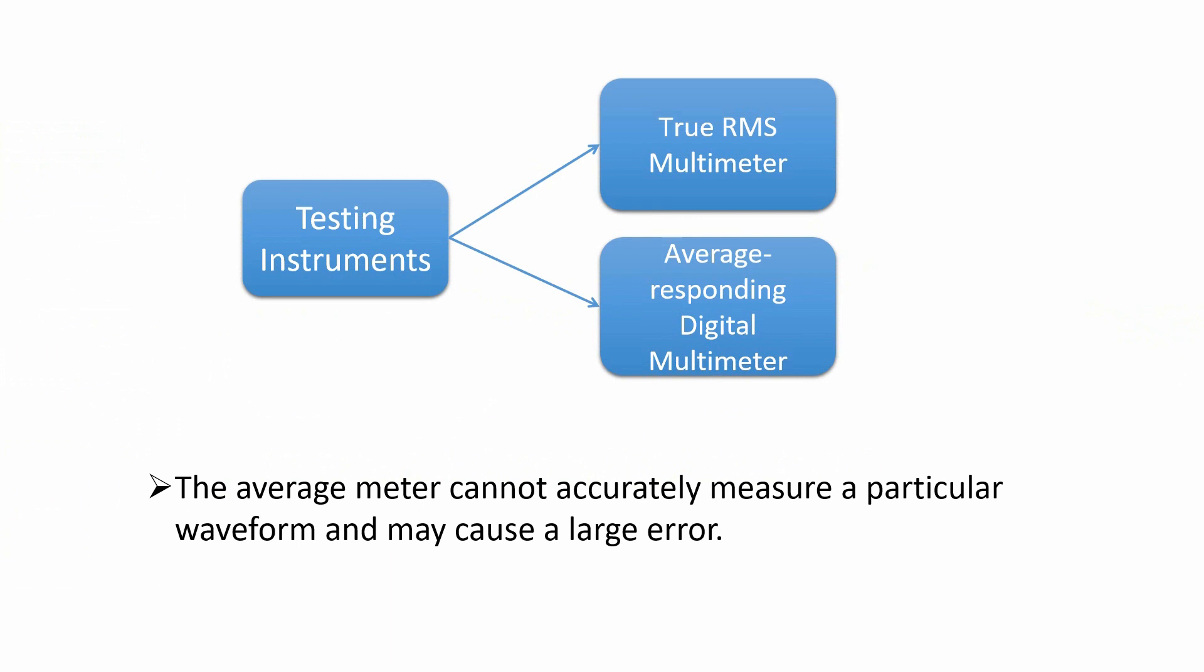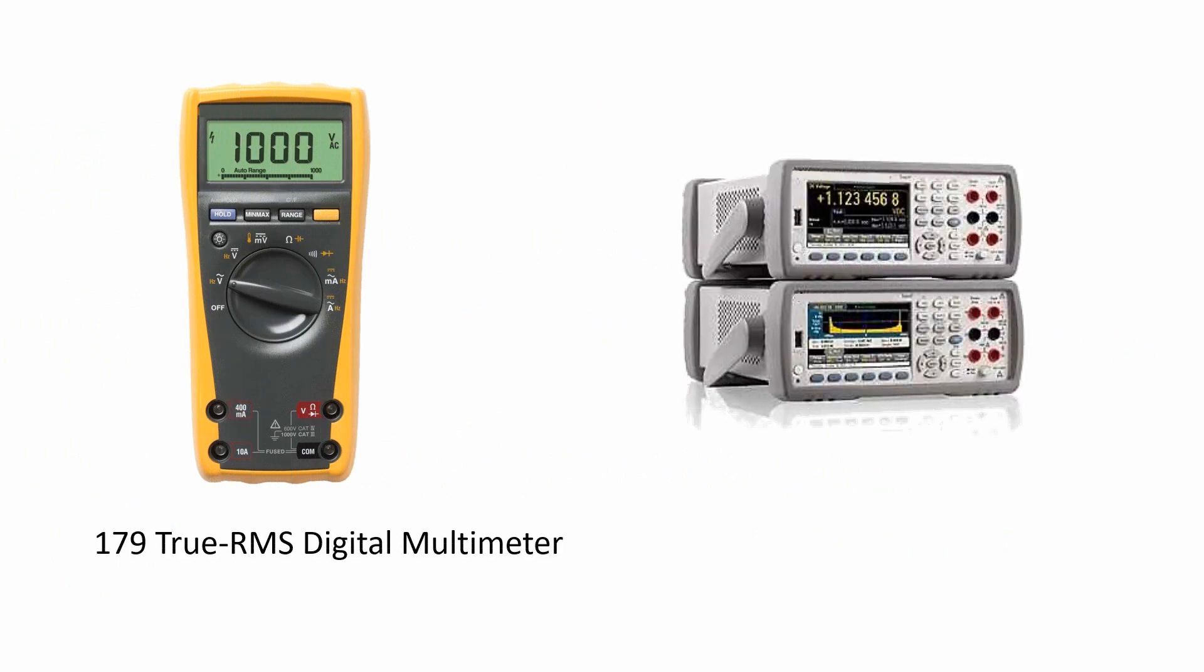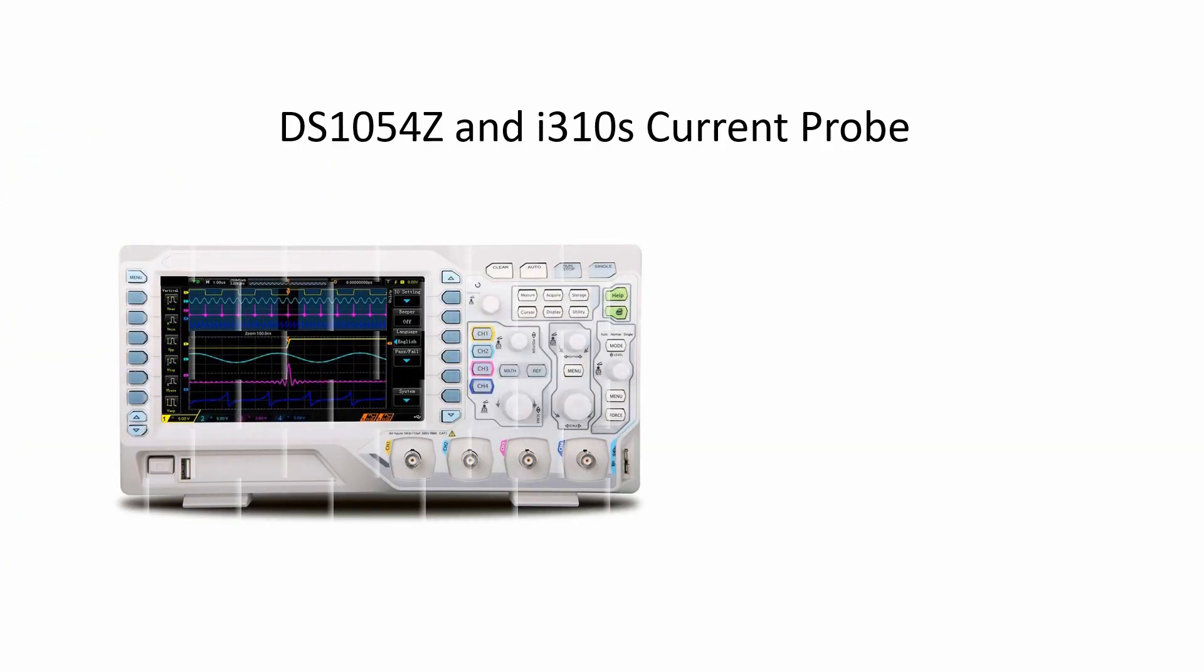For example, 179 true RMS digital multimeter and family of TrueVault digital multimeters. We can also use an oscilloscope with a current probe to run the test as well.